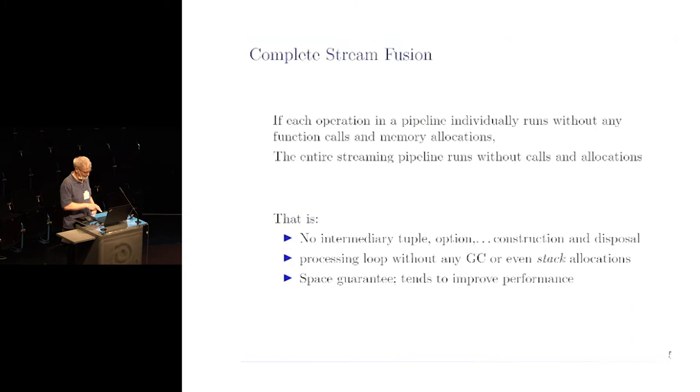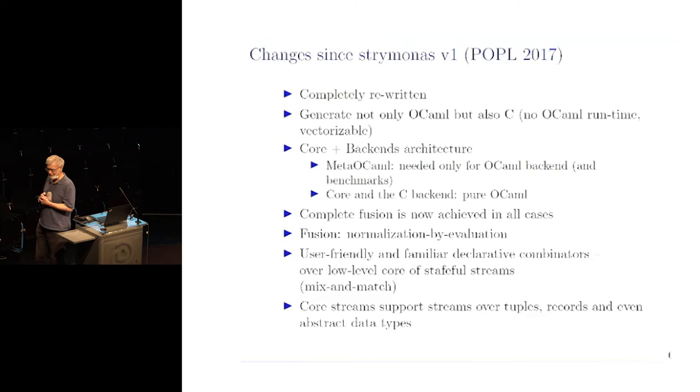Some of you may be aware of the earlier version of the library, which was already five years ago. As you can see on the slide, there are many changes. I'll mention a few of them. It's completely rewritten. Now it is able to generate not only OCaml, but also C. We'll see examples of it. It's restructured. There is a core that does most of the things, that does fusion and what's necessary, and the backend, which is responsible for code generation. Currently there is a backend that's extensible, so there is a signature and to get a new backend, you just implement the signature. Currently we have two backends. There is an OCaml backend that generates OCaml and depends on metOCaml. There is a C backend that generates C. The core and C backend are pure OCaml and don't depend on metOCaml.